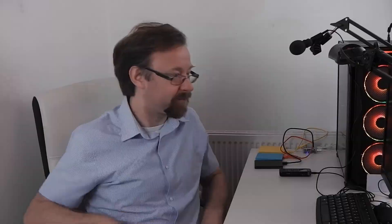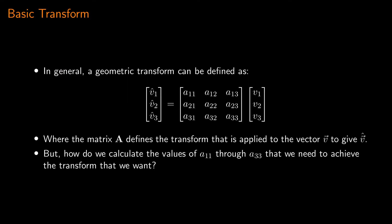Without much further ado, let's start by looking at the theory of geometric transforms, and then we'll move on to looking at how we can implement that in code. So, geometric transforms. In general, a geometric transform can be defined like this: we have some vector V-hat, which is equal to the product of our transform matrix and our original vector V.